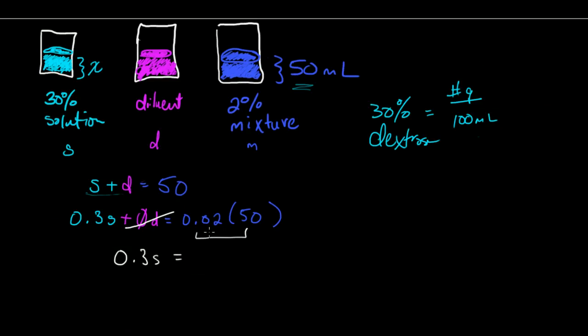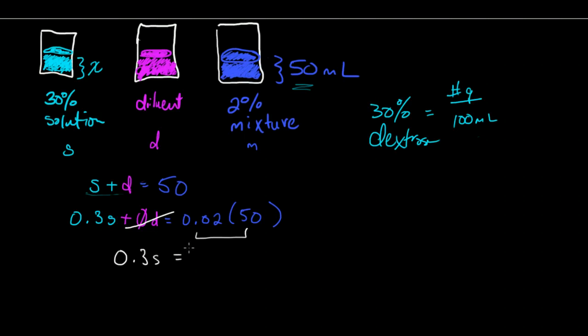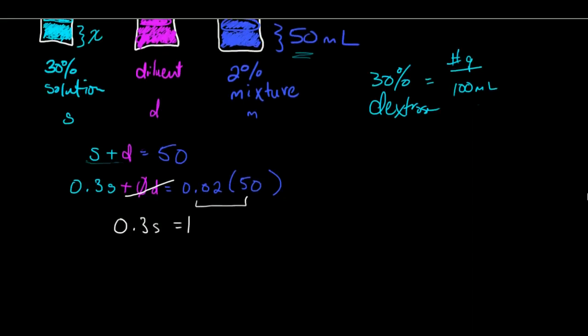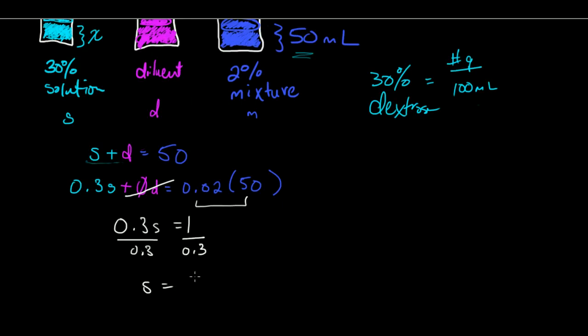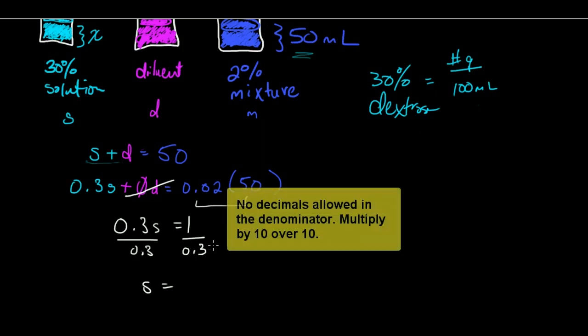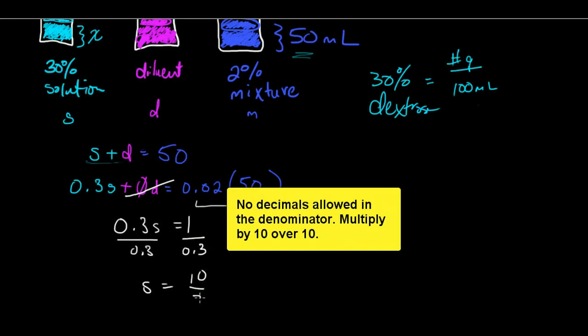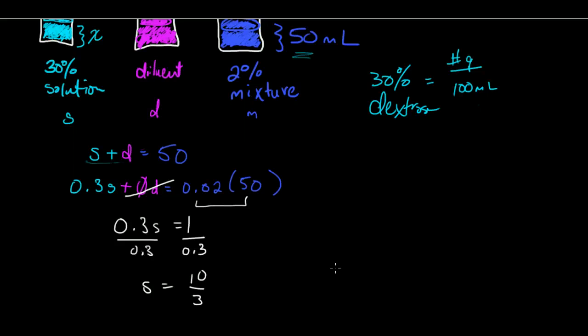Well in all cases 2% of 50 is 1. So how much solution do I need to use to dilute down to 2%? I'll divide that by 0.3, and I'll get that S is somewhere along the lines of, well let's make that a proper improper fraction. That would be something like 10 thirds or about 3.3 milliliters of my solution.